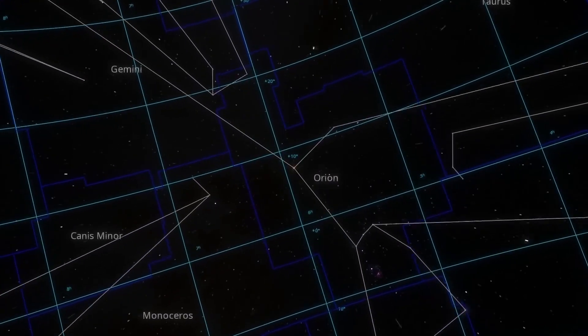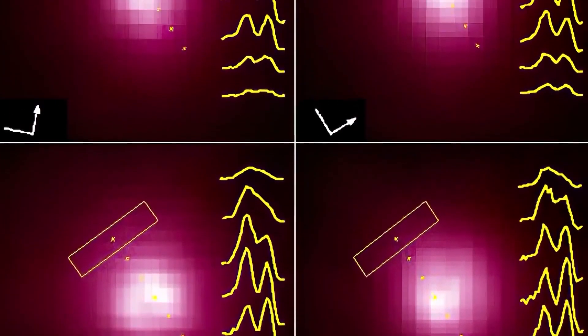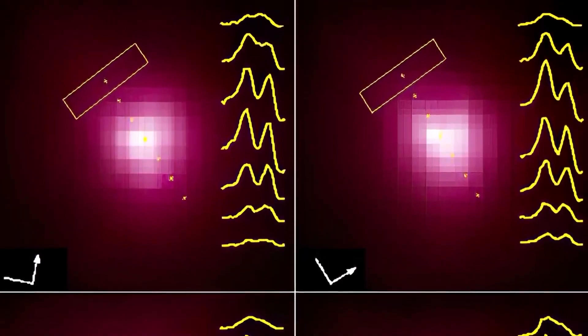At the same time you'll also notice a bright red dot called the Betelgeuse and the star's strange dimming has captivated sky gazers for thousands of years.